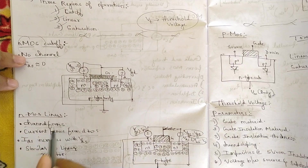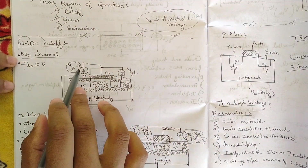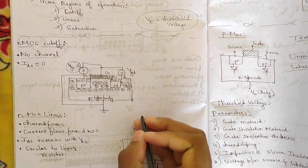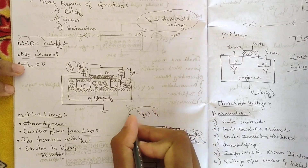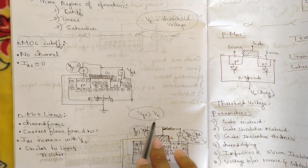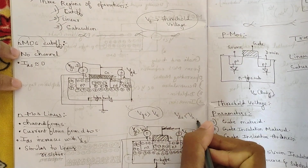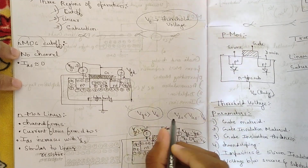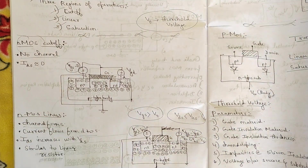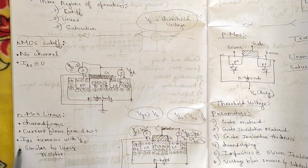In the NMOS linear region, a channel is formed between the source, gate, and drain. Unlike in cutoff where VGS was zero, here VGS is greater than the threshold voltage VT. Also, VDS (drain-to-source voltage) is less than VGS minus VT. Current flows from drain to source, and IDS increases with increasing VDS voltage.